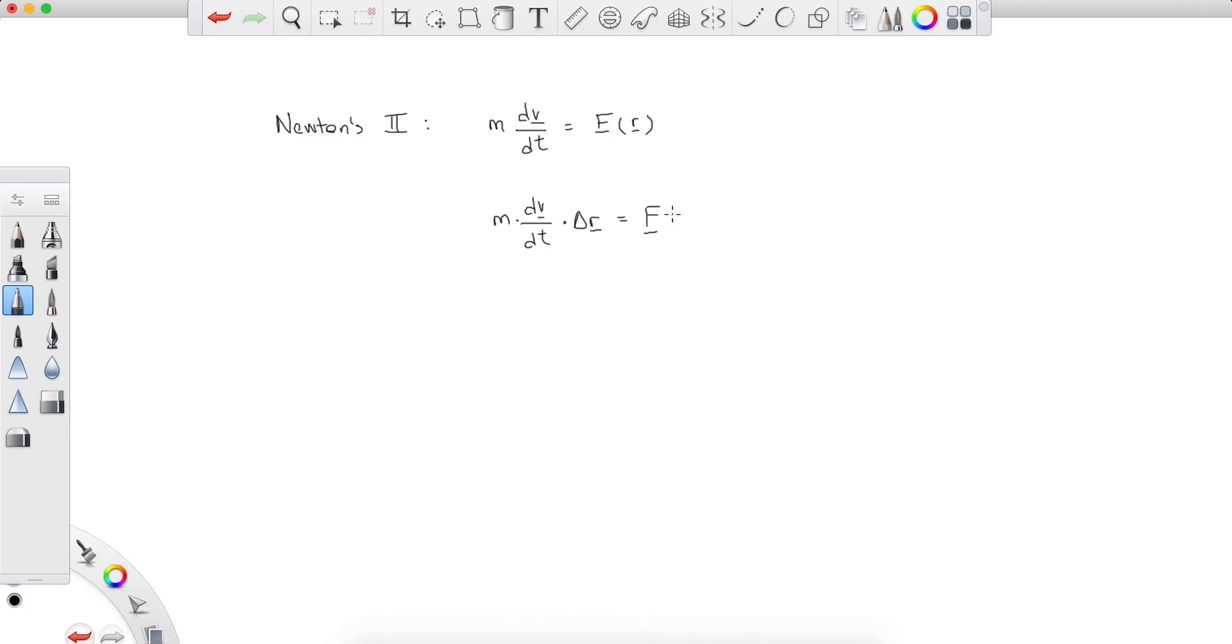So F of r times delta r. And throughout this whole derivation, we're going to assume that delta r is infinitesimally small so that this F of r remains constant. So delta r approaches to zero so that F of r is constant.